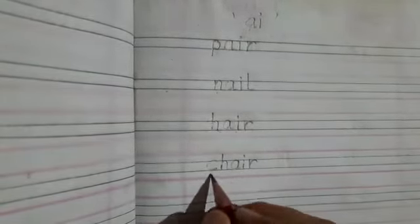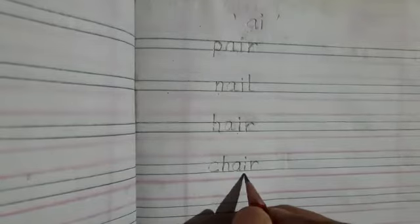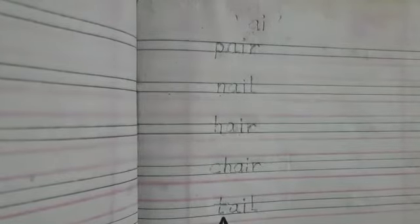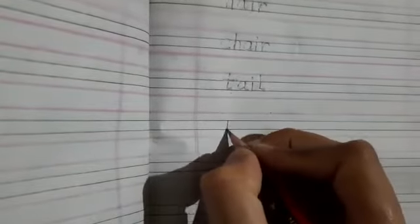H-A-I-R — hair. Next word is C-H-A-I-R — chair. Chair. Next is T-A-I-L — tail. Tail. Okay.